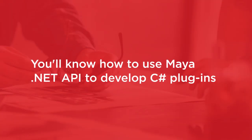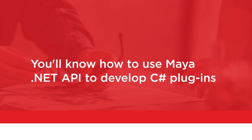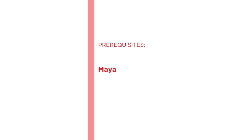By the end of this course you should know how to use Maya's .NET API to develop C-Sharp plugins. Before the beginning of the course you should be familiar with working in Maya and C-Sharp scripting. I hope you'll join me on this journey to learn more about creating custom plugins with Maya in the Introduction to C-Sharp Plugin Development for Maya 2019 course at Pluralsight.